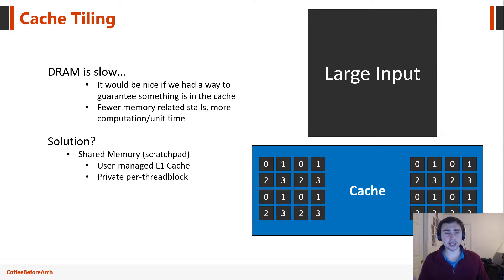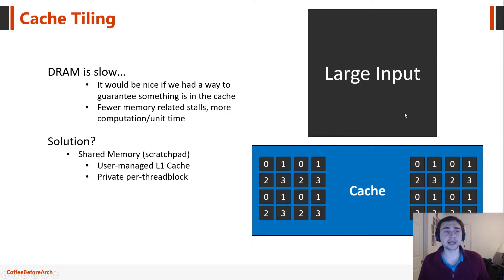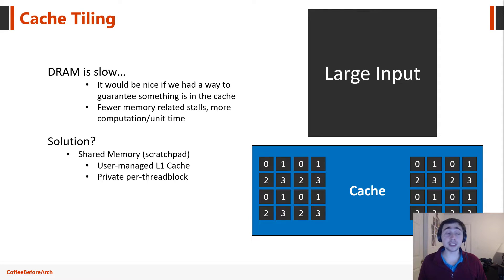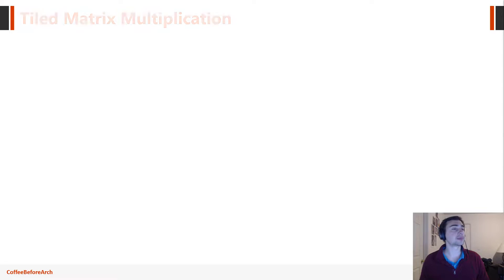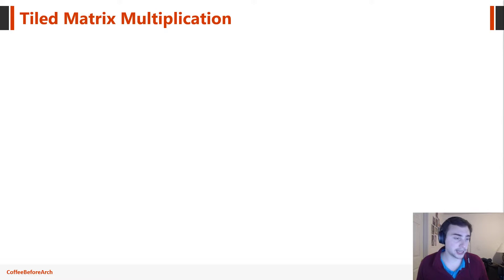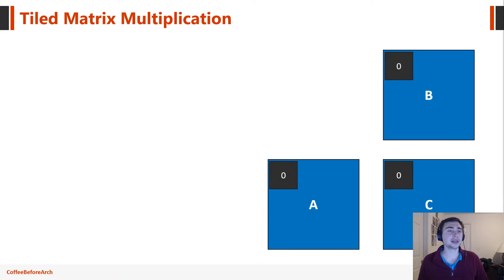The other big thing that's really nice about using shared memory and cache tiling is that when we have very large inputs, the entire input won't fit in the cache. So our solution is to only put the pieces of the large input that we're using right now into the cache, so we can always know that what's in the cache is useful. That's what we're going to do with shared memory.